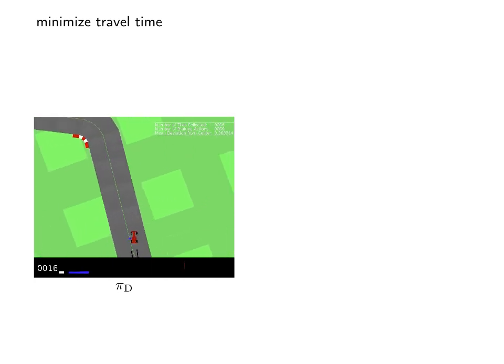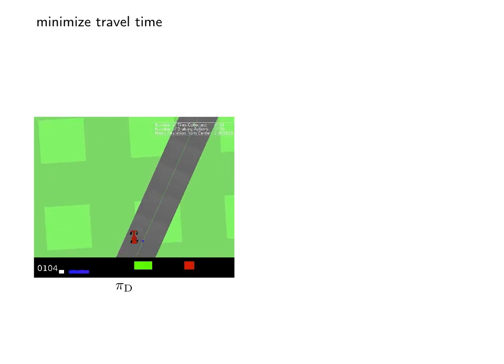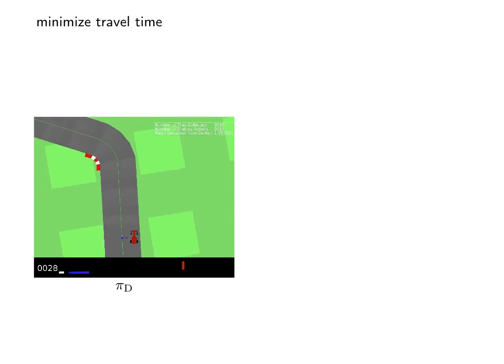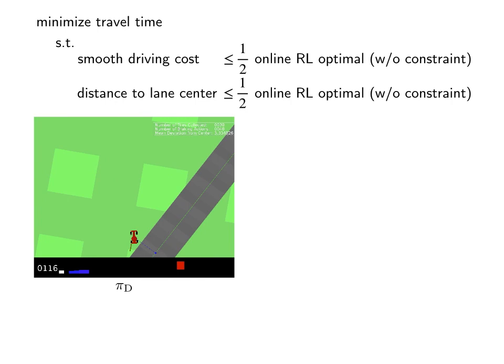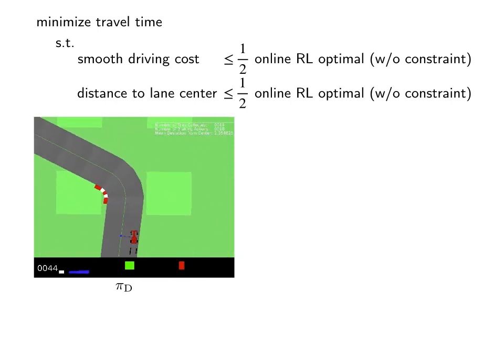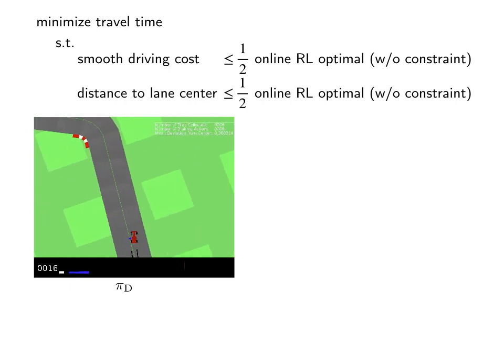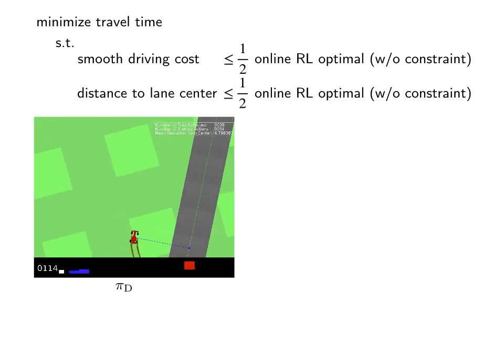Let's look at some experimental results on the simulated car racing domain. Here, the original task is to minimize travel time. Here's one example of the data generating policy. And then we added two additional constraints after the fact. One is driving has to be smooth, and two is that the car stays close to the center of the lane. The threshold is set to be about half of the value of an optimal policy trained without additional constraints.